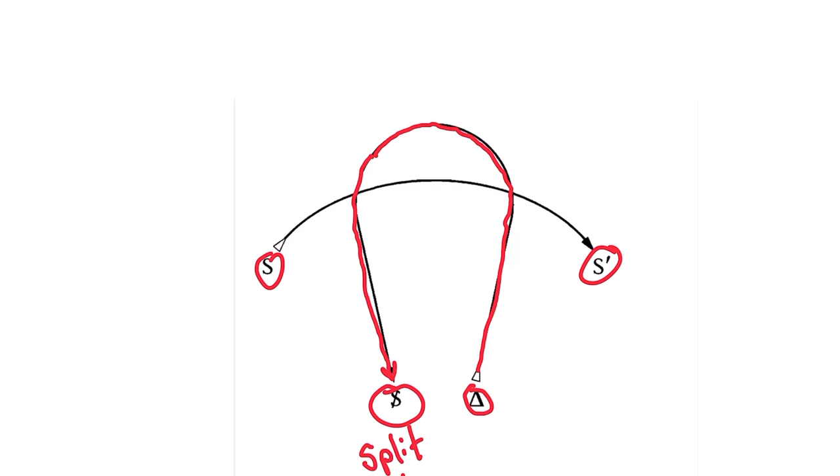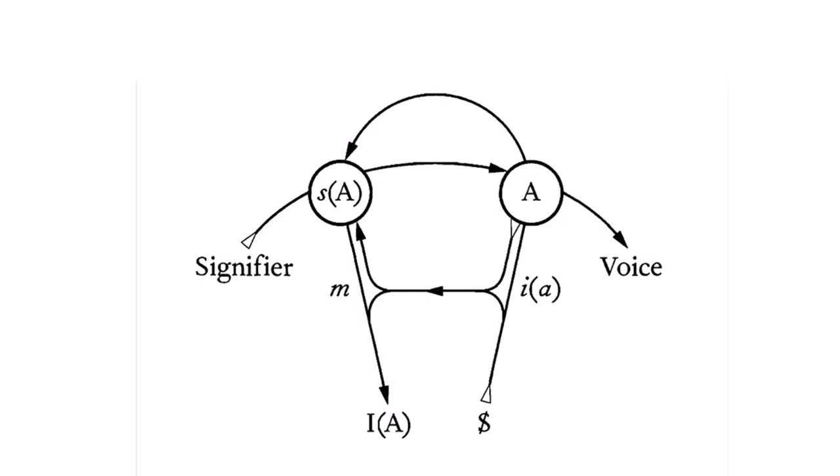Turning to graph two, we can see that the terminal point of graph one now becomes the starting point with that mythological pre-symbolic subject of need being reconstituted as a subject that is fundamentally divided.